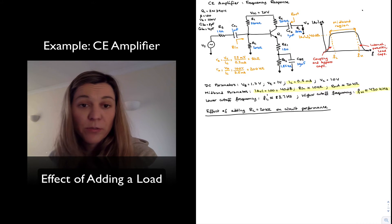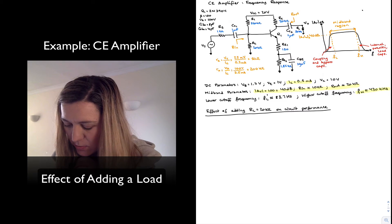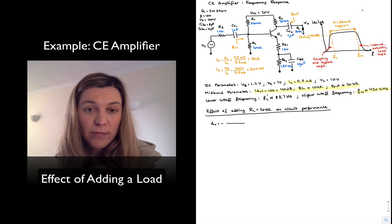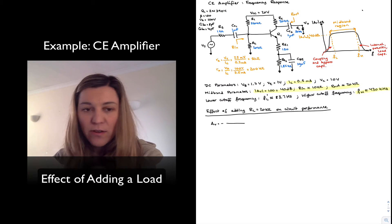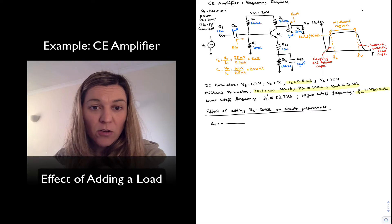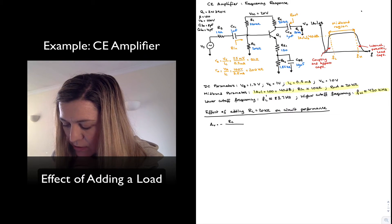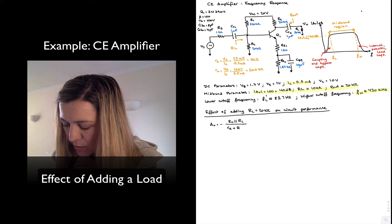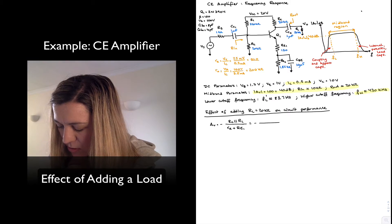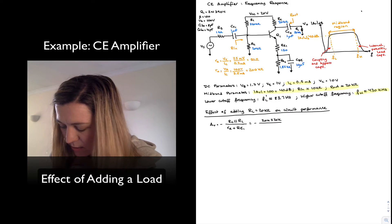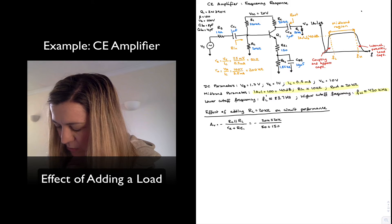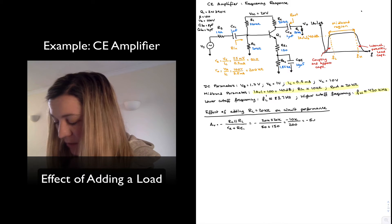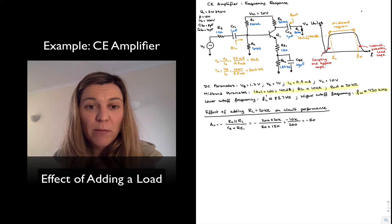The first thing affected is the mid-band gain. We calculated the gain as negative RC divided by RE — collector resistance divided by emitter resistance — but once we have this loading, the overall resistance at the collector is the parallel combination of RC and RL. So it becomes negative 20k in parallel with 20k, divided by RE1 plus RE, which is 50 plus 150. That gives negative 10k over 200, or negative 50.